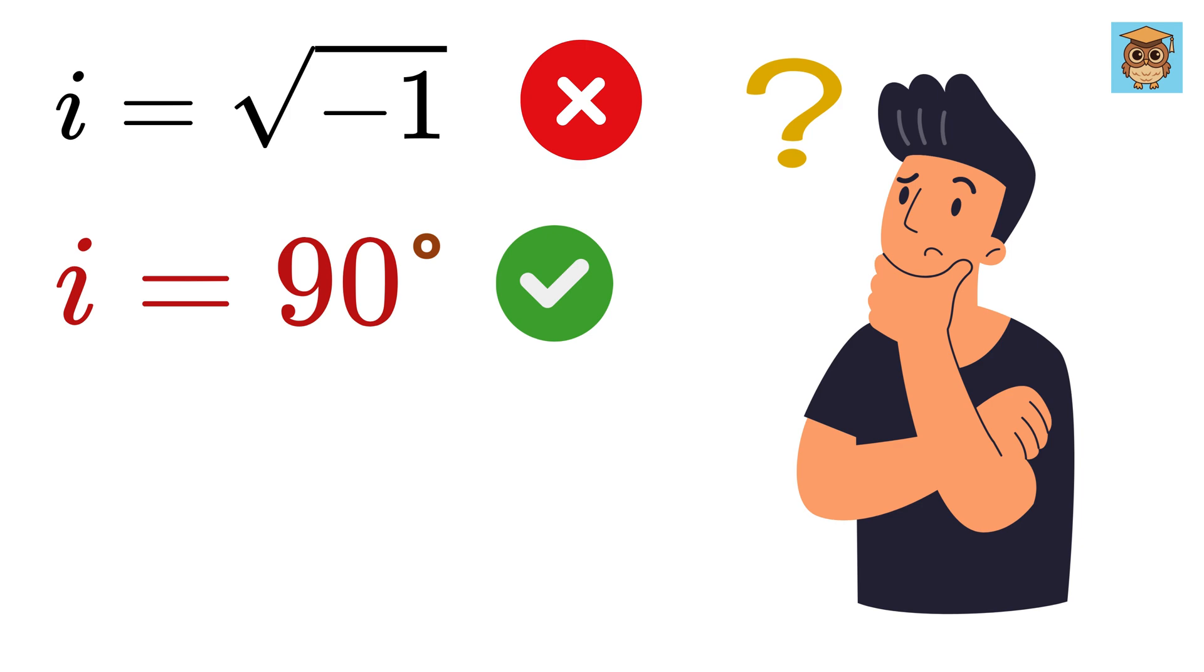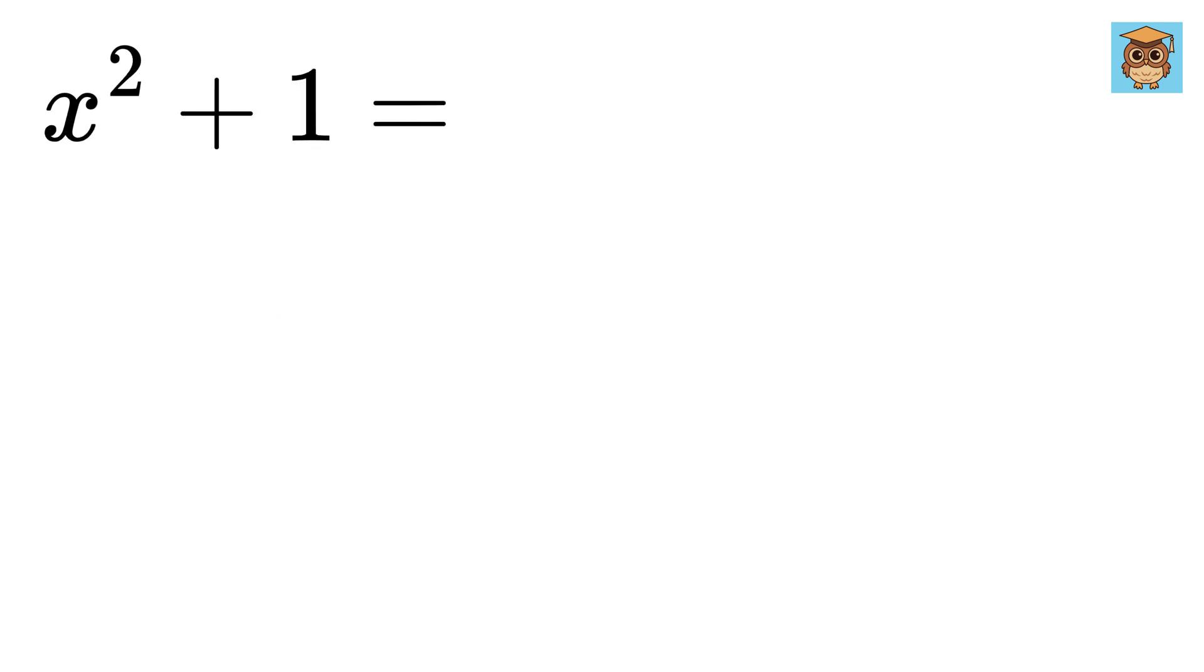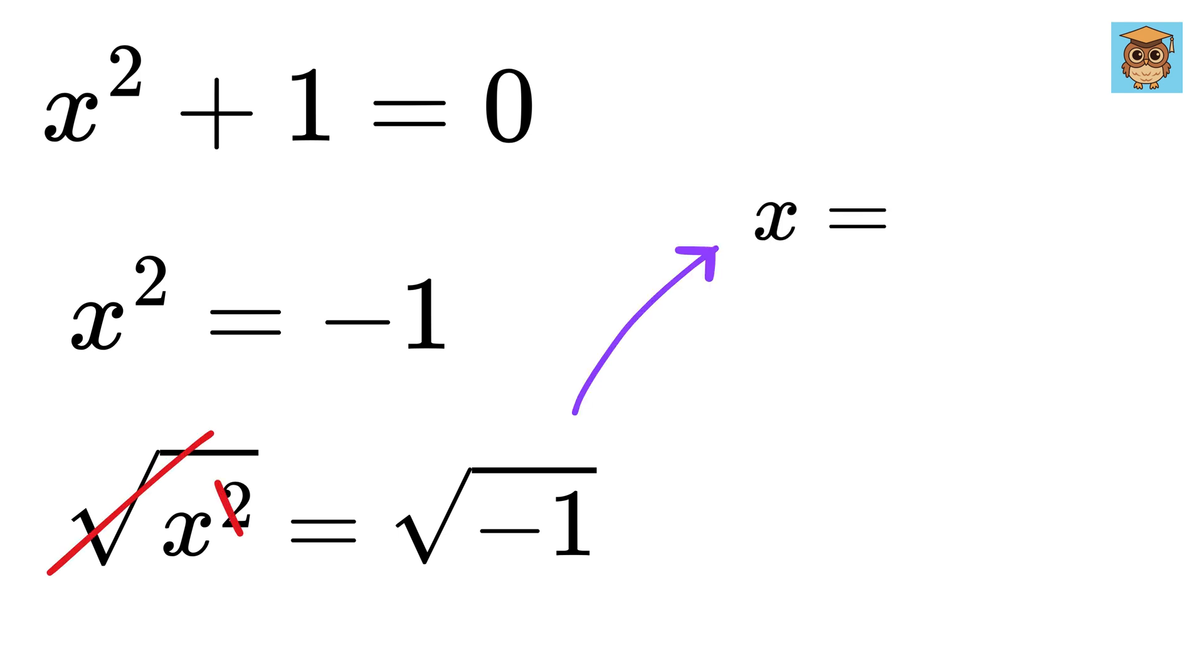Now, the first question that comes to mind is, where did i come from? Let us learn about i algebraically. Consider the equation x² + 1 = 0. Now take 1 on the right side to make it x² = -1. Now take square root on both sides. We get this as x and this as plus minus square root of -1. And what is this? Yes, it is i. So x = ±i.